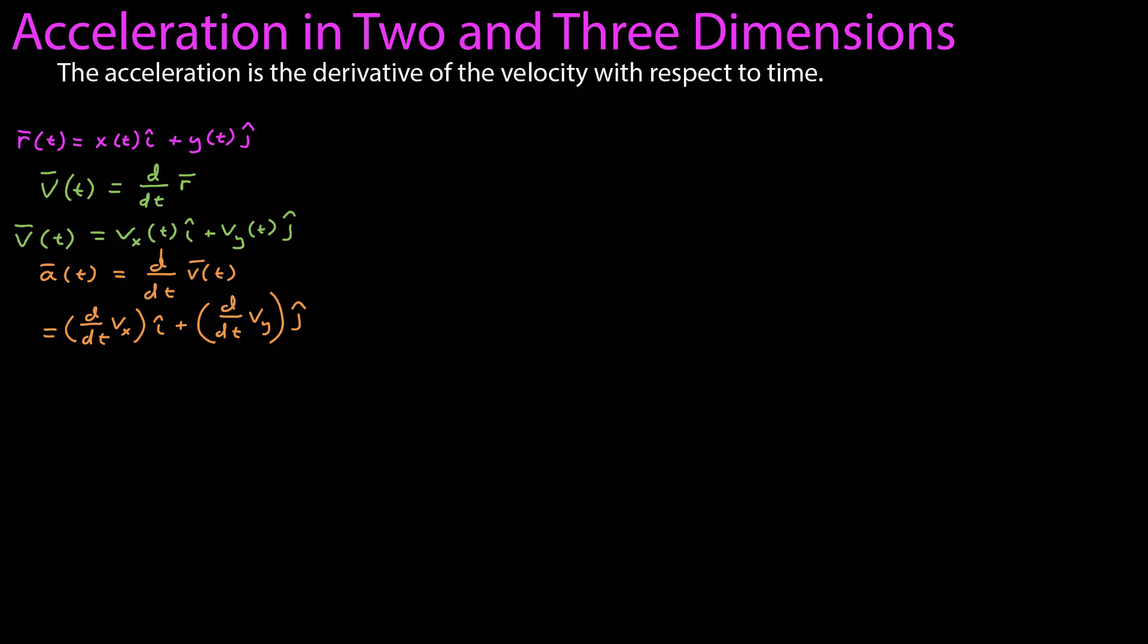The i-hat and j-hat vectors are constant, so you just treat them as constants, like you would with any differentiation. You do have to keep them separate because you can't mix the different components. That will give us the x component and the y components of the acceleration, which themselves may vary with respect to time.